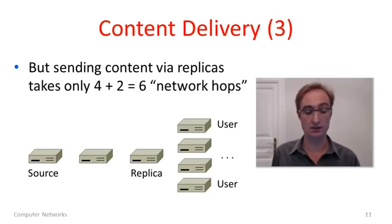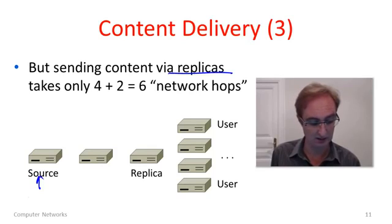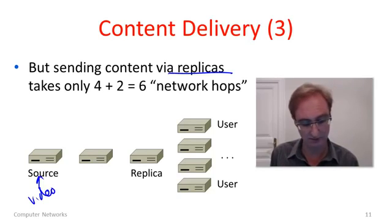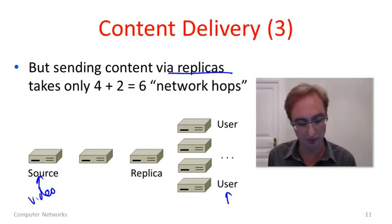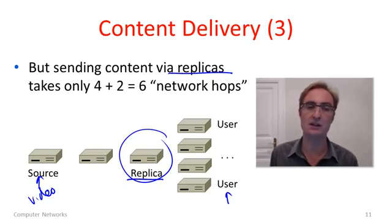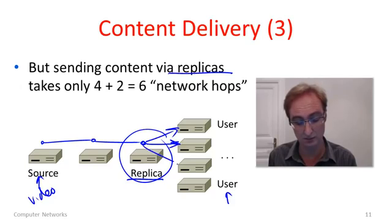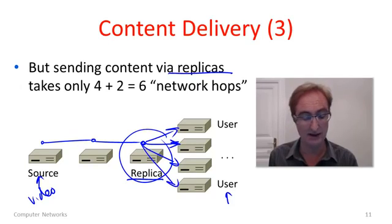Well now, let's send the content via these replicas. Here's a replica node here. So the source is the same node. The users are over here on the right. But we've also added this replica node right here. So the way we're now going to send the same video to all of these users is to send it from the source once to the replica that's nearby. And then from the replica, which is deliberately placed close to the users, we'll send one copy to each of the users.